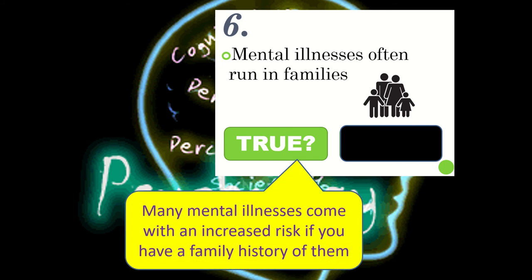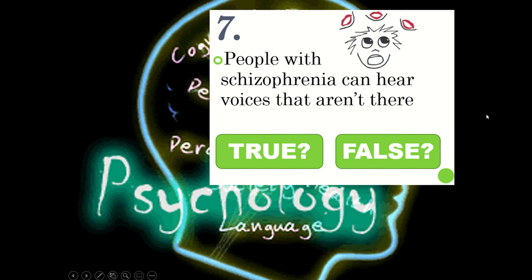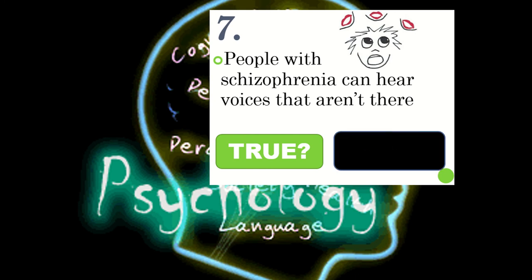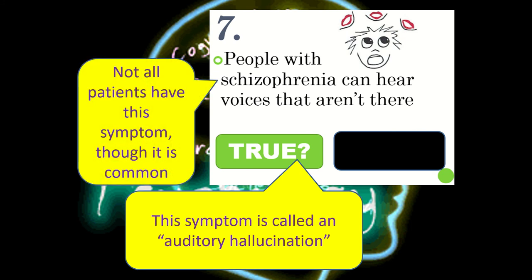Many mental illnesses come with an increased risk from a family history. So unfortunately, if you have someone in your family who has been diagnosed with a mental illness, it does put you at a greater risk of developing it. For example, if you've got a parent who's schizophrenic, you are six times more likely to get it than someone in the general population. Statement 7: people with schizophrenia can hear voices that aren't there — this is true. This is known as an auditory hallucination. It's not experienced by all schizophrenics, but it is one of the most common symptoms. Hallucinations are false sensations; auditory hallucinations tend to be the most common, followed by visual hallucinations — seeing things that aren't there.